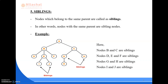Next comes siblings. Nodes which belong to the same parent are called siblings — in other words, nodes with the same parent are known as sibling nodes. Here, B and C are siblings; D, E, and F are siblings; G and H are siblings; and I and J are siblings.